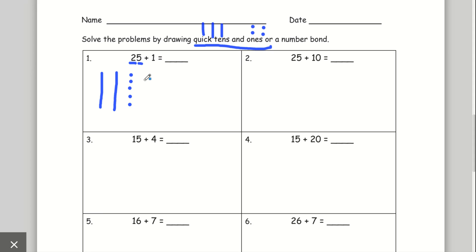Plus 1. I'm going to add 1 right here. That means I have two tens and one, two, three, four, five, six ones. 25 plus 1 equals 26.